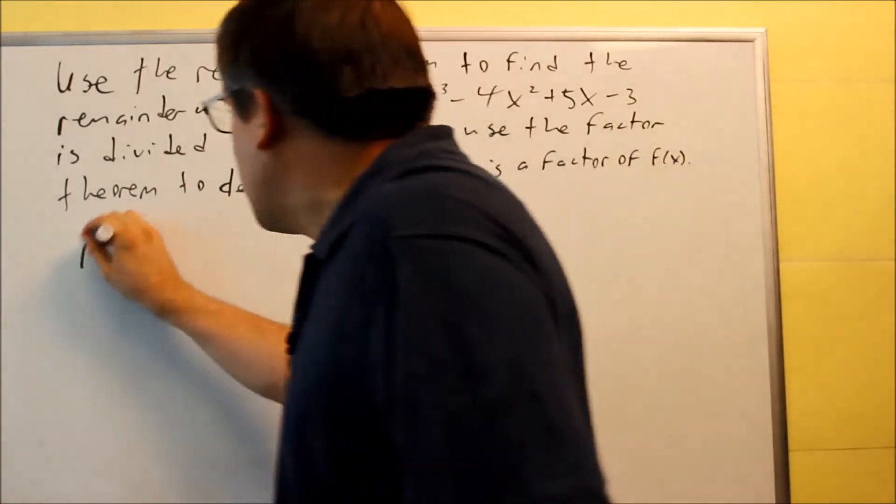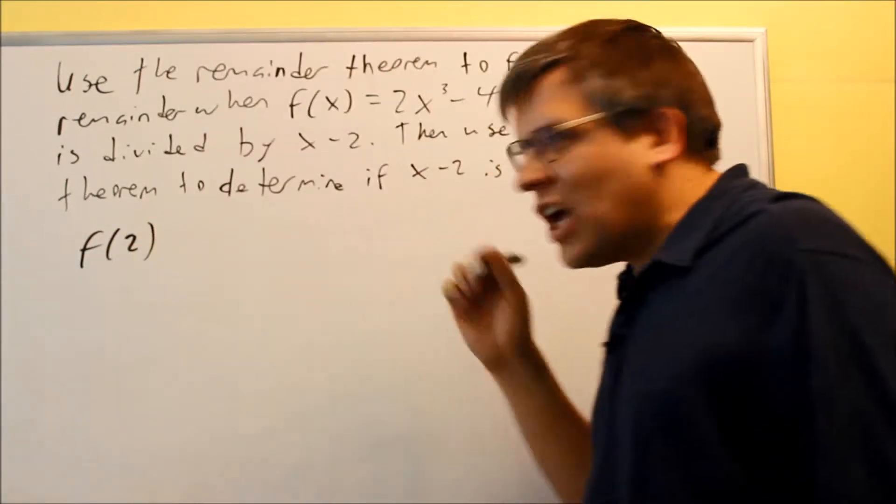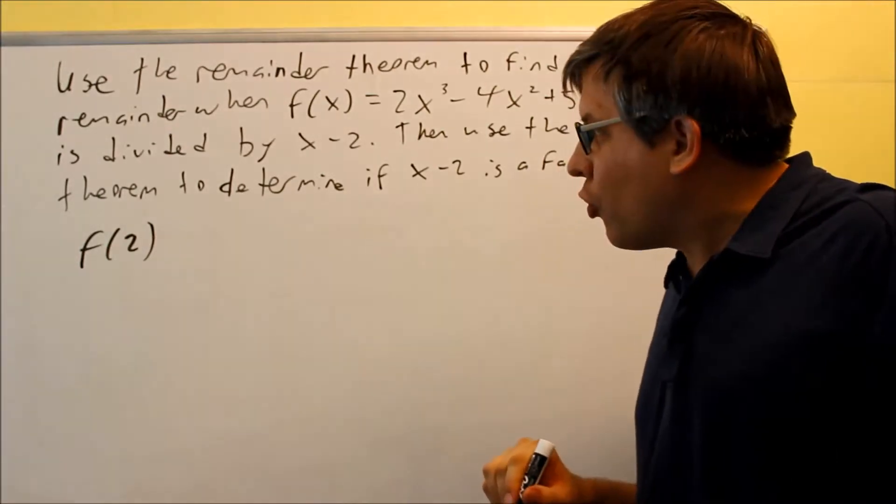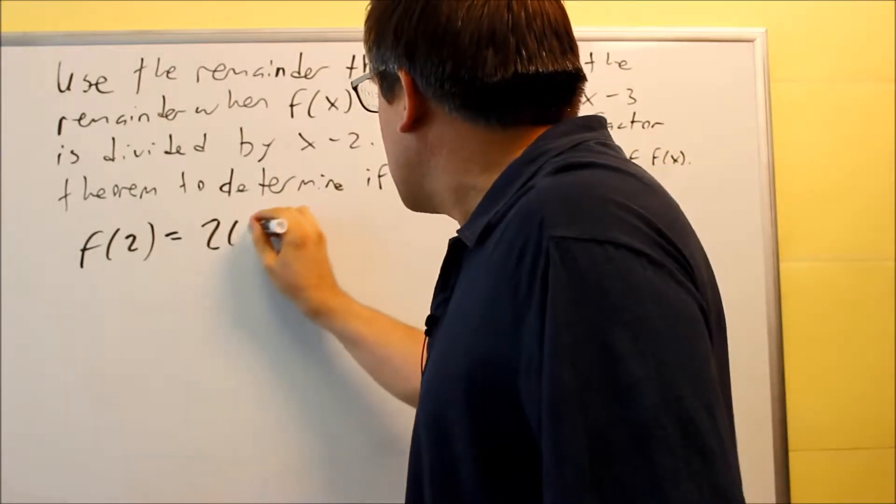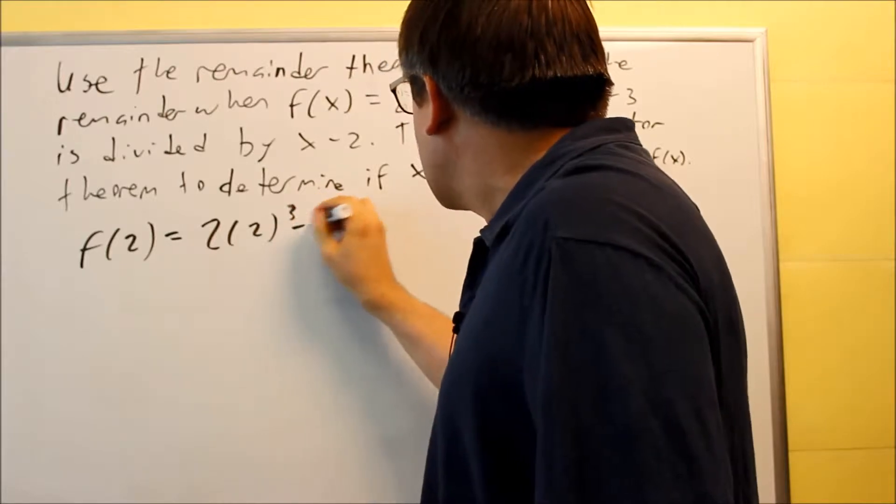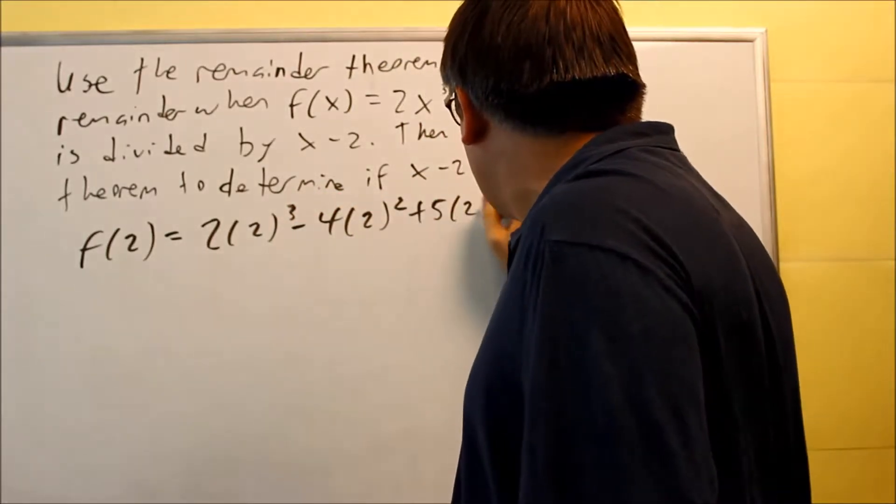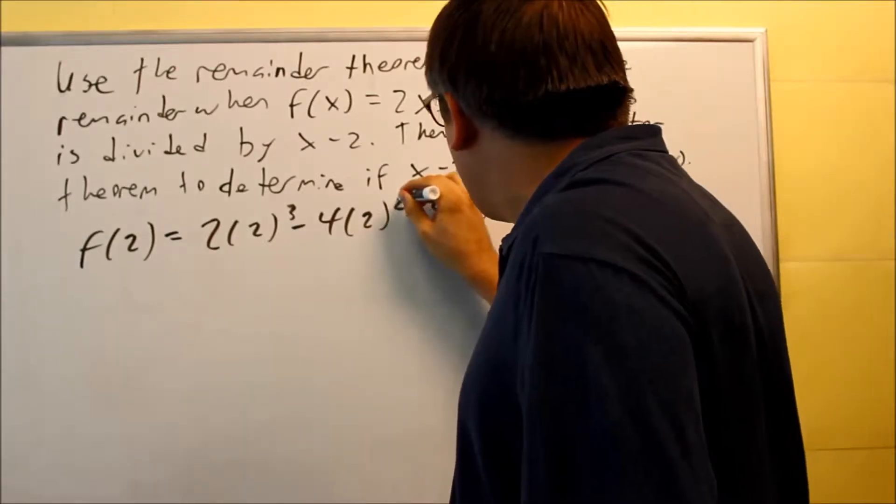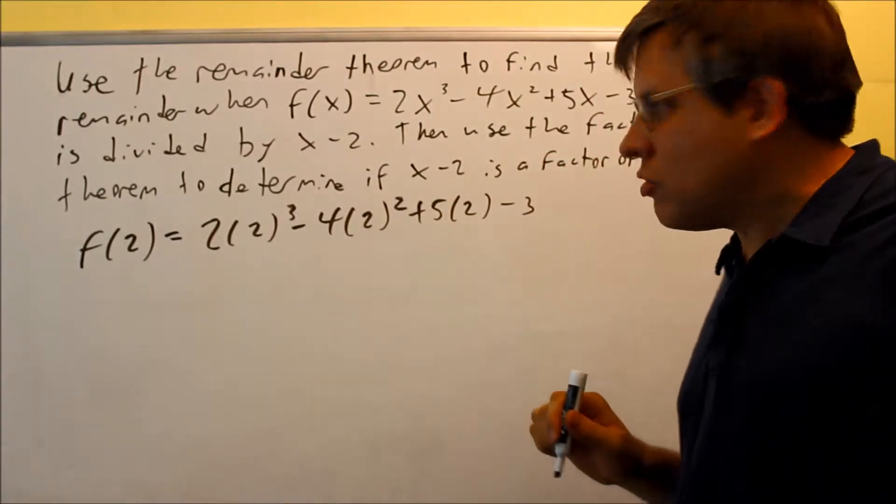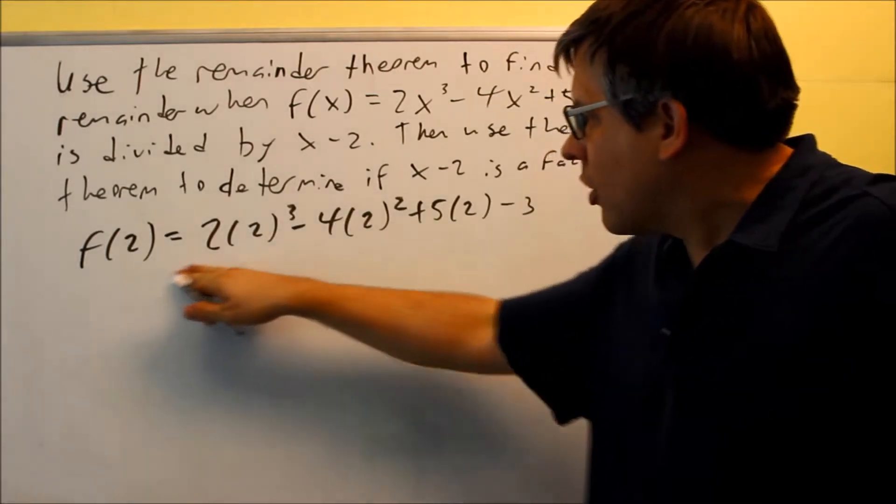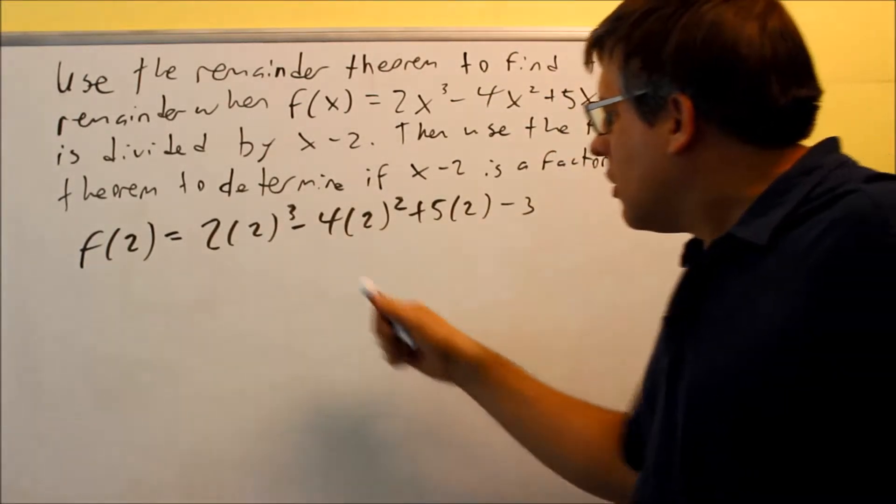So suppose we want to first find just f(2) the normal way we've done before in the past. Well how this works is you put a 2 in there for x, and we can work this out to see what we actually get for f(2). So again, this is doing it the traditional way that you might be used to, putting a 2 in here and working it out.